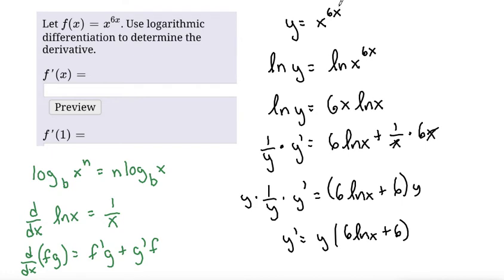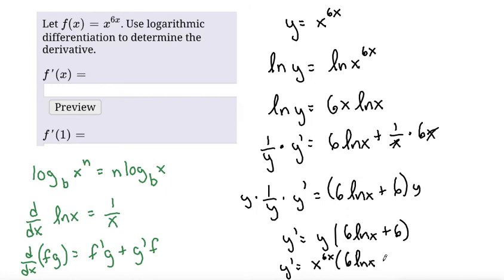Notice that we have a definition of y in terms of x, so we can rewrite y as x to the power of 6x. So we can write y prime equals x to the power of 6x times (6 ln x + 6). That would be our derivative — our f prime of x — because f of x is the same thing as y.